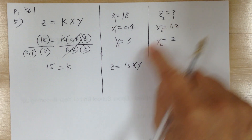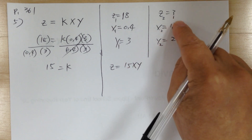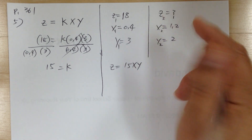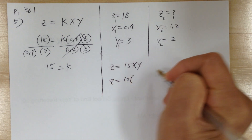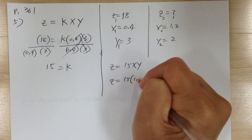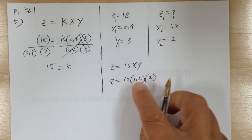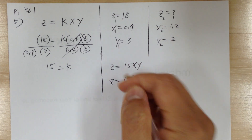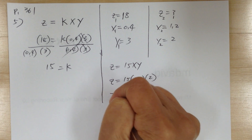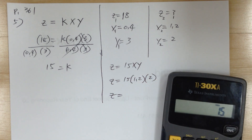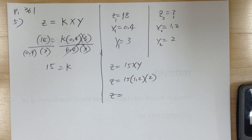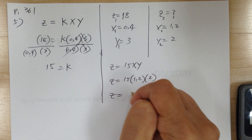After that, substitute — use the equation to solve for z. Z equals 15 times 1.2 times 2; that's your x and y. So z equals 36.